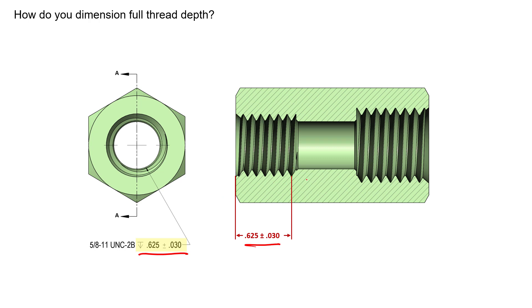That is kind of a very specific control. Now more often than not what you'll see on drawings is this 5/8-11 UNC-2B depth to 0.625. Now this depth is a minimum usable thread.